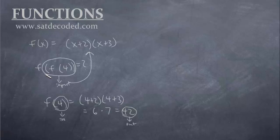So now when we have this f(4), we can replace it with 42. So f(f(4)) is equal to f(42). So what is f(42)? Now 42 has become the new input.